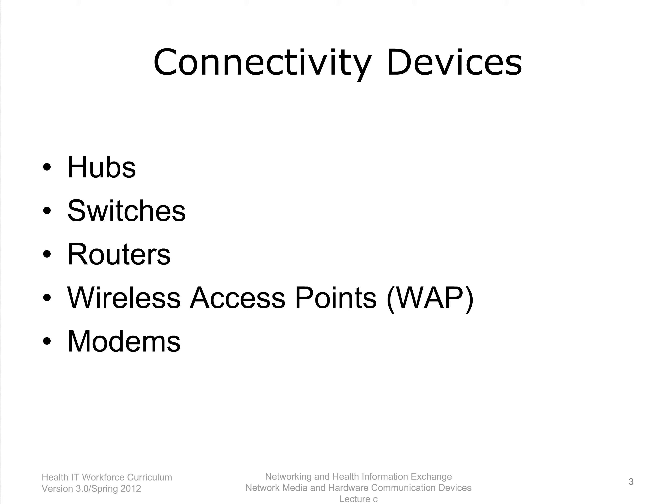We know we need a NIC in each node and media to connect the nodes. Now what do we connect the node to? We can use a hub, switch, router, wireless access point (WAP), or modem. These devices will allow nodes to talk to other nodes on a network.